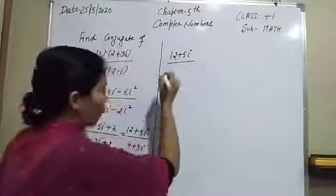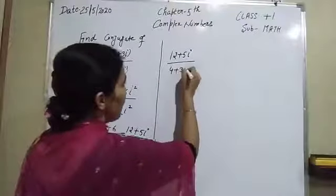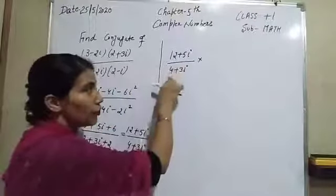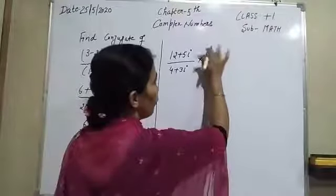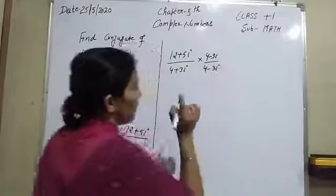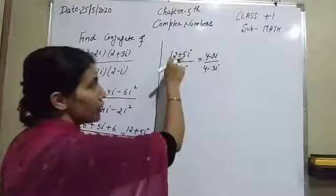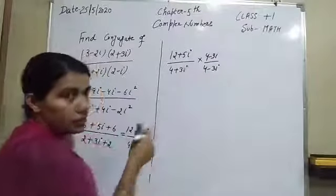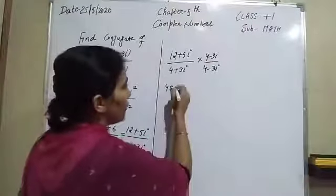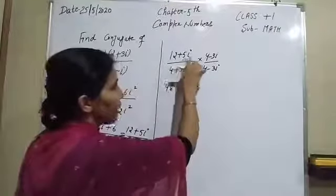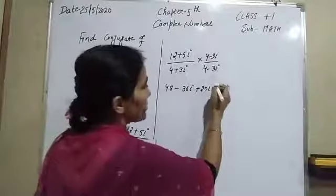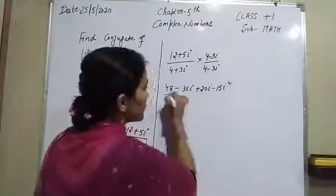So we have 12 plus 5 eta over 4 plus 3 eta. We rationalize by multiplying by (4 minus 3 eta) over (4 minus 3 eta). In the numerator: 12 into 4 is 48, 12 into minus 3 eta is minus 36 eta, 5 eta into 4 is plus 20 eta, and 5 eta into minus 3 eta is minus 15 eta squared.